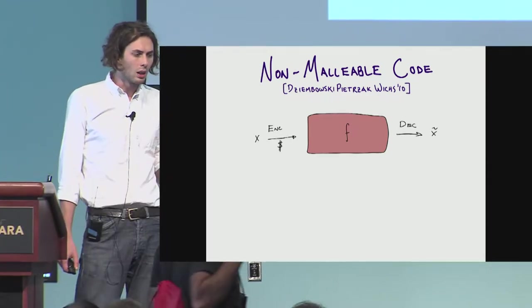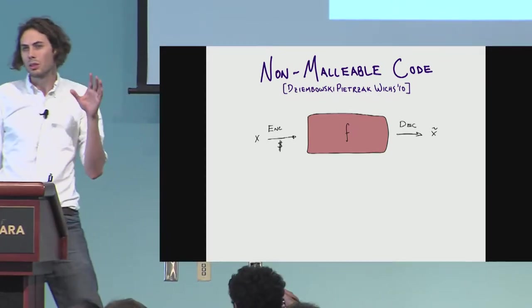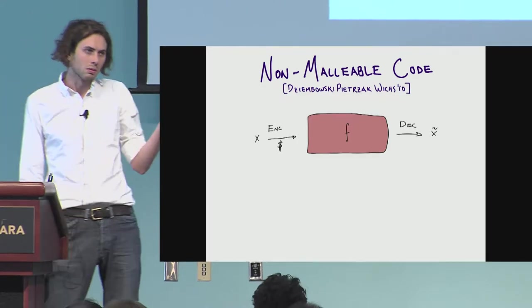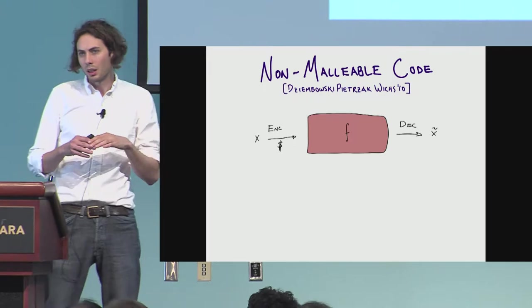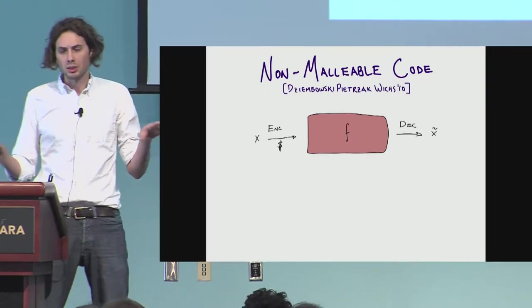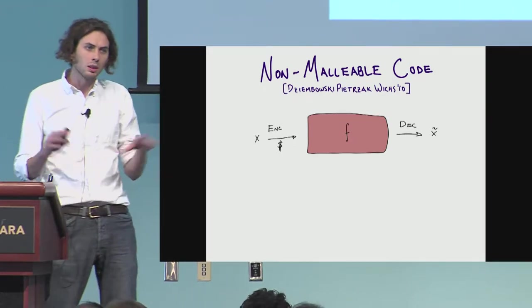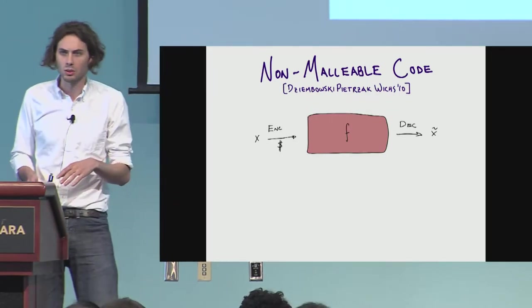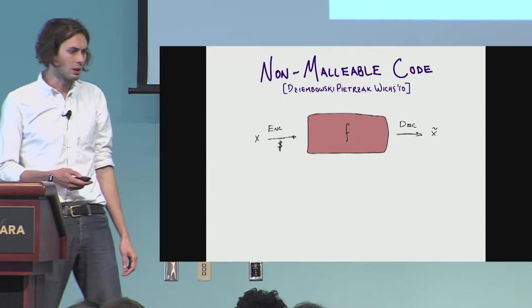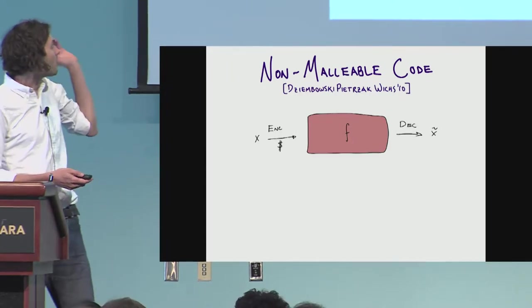I want to remind you that this coding scheme, unlike most cryptography, is completely public. There's no secrets whatsoever. And for this talk, everything is going to be information theoretic. There's no computational indistinguishability or anything like this.